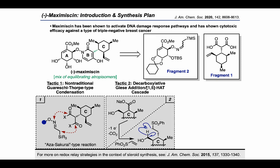The second key tactic they relied on was a decarboxylative Giese addition followed by a 1,5-hydrogen atom transfer, or HAT, cascade. In this tactic, we oxidize a carboxylate intermediate and use a decarboxylation to generate an alkyl radical that can be trapped in a radical conjugate addition to a vinyl sulfone. The second part of this tactic is a 1,5-HAT that ultimately allows the oxidation of a nearby alcohol to an aldehyde.